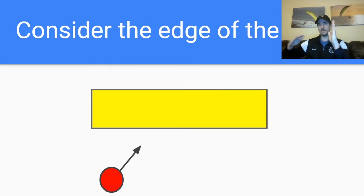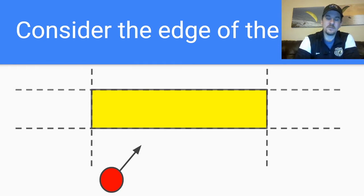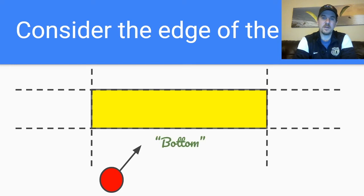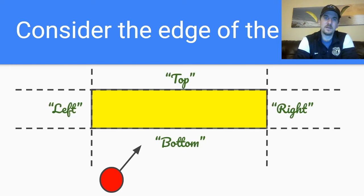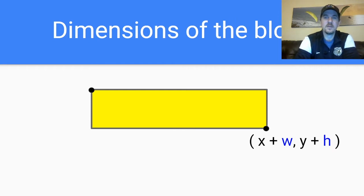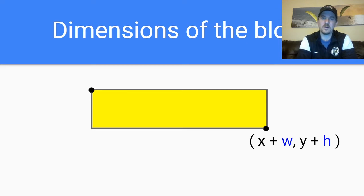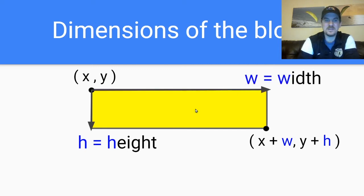And if it hits it on the sides — if the ball comes in from the side — it's going to bounce off, but the Y velocity stays the same and X is going to change. So really there are four edges to consider: the bottom, the top, the left, and the right. We're going to do all of these edges, but we'll start with the bottom. I put this slide in here to be clear about the dimensions. The X and Y of the block are the top left corner — that's where the rectangle is drawn. All the way down is X plus the width and height.